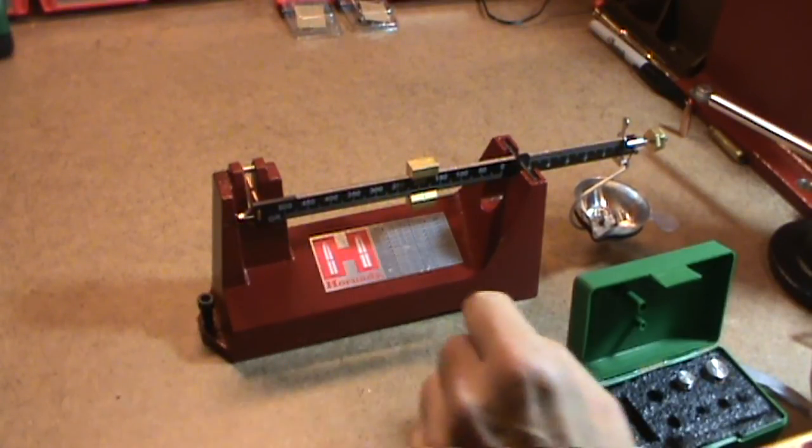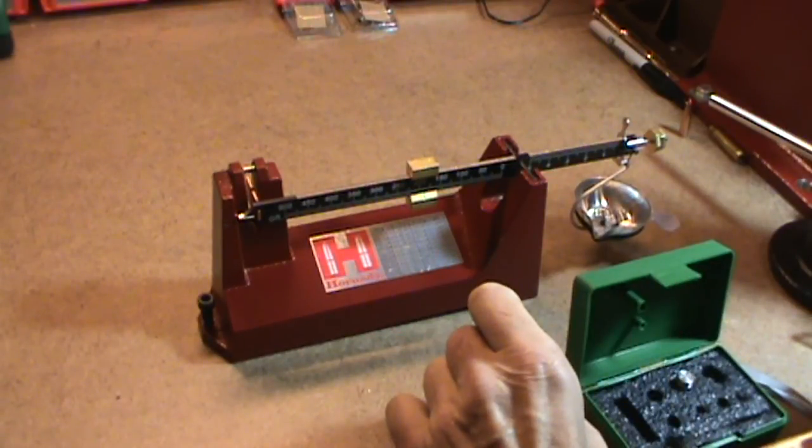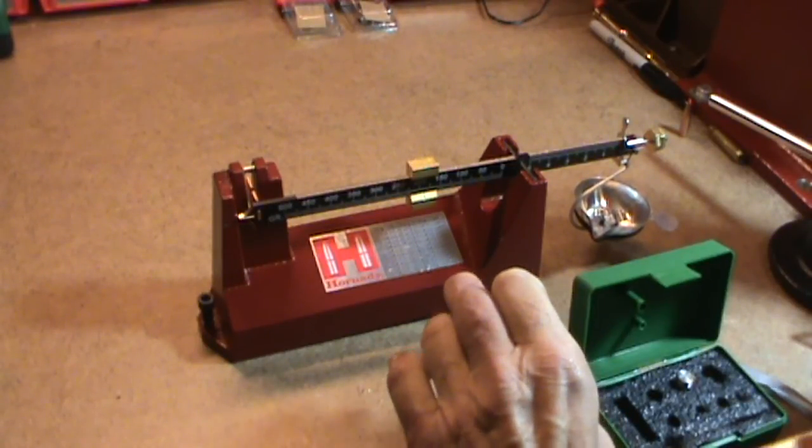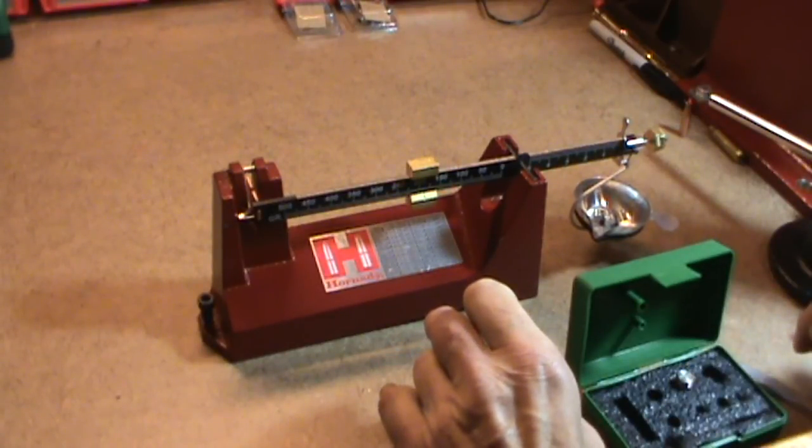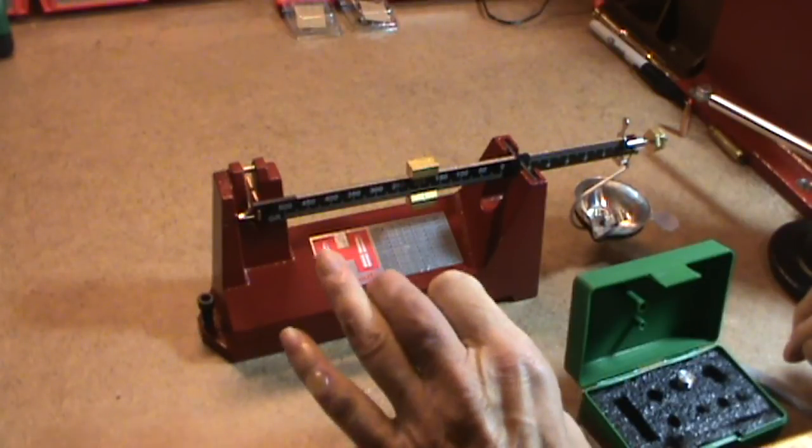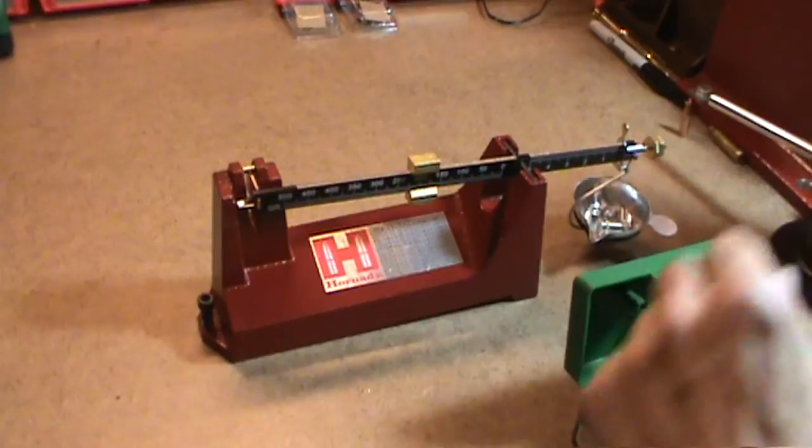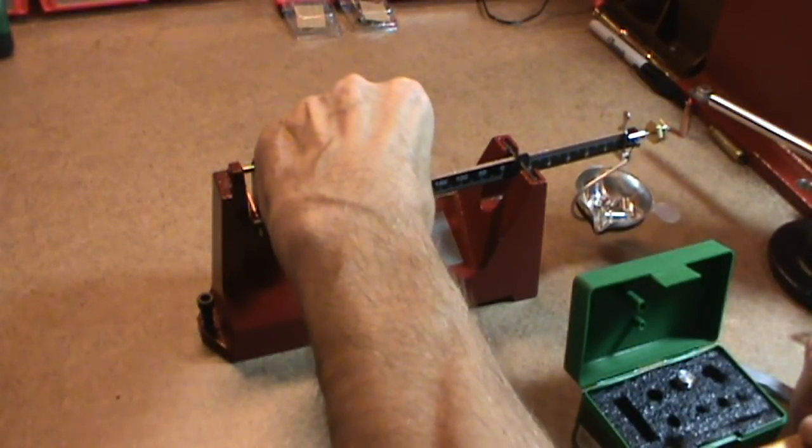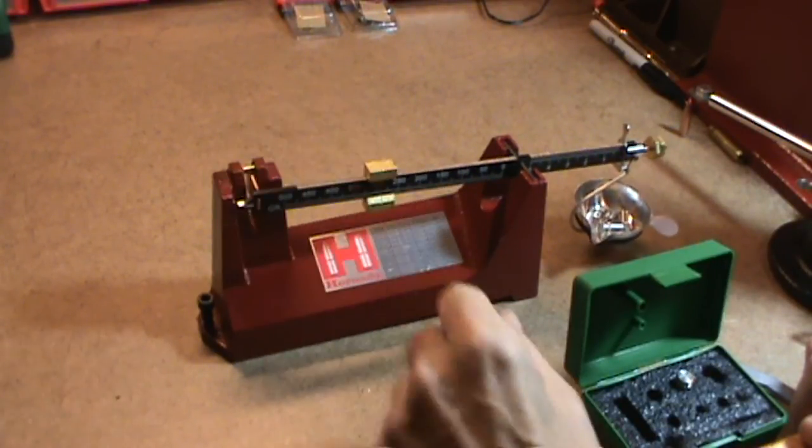It's close, but it's just a little bit off. Now what that tells me is that before I start measuring powder charges with this, I'm going to put enough check weight in there to match the powder weight that I want to measure out and center it so that I don't have a slight error in there in the powder weight.